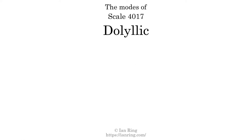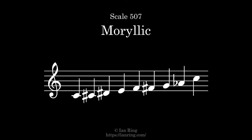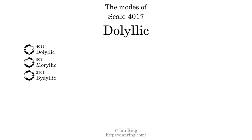This scale has 8 modes. The first mode is itself. The second mode is scale 507, also known as Merillic. It sounds like this. The third mode is scale 2301, also known as Bidelic. It sounds like this.